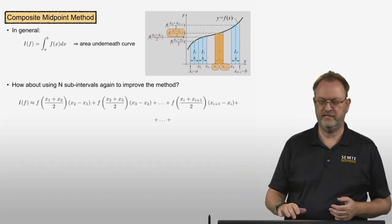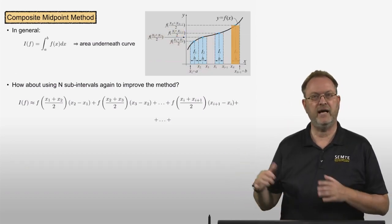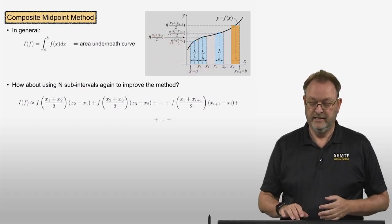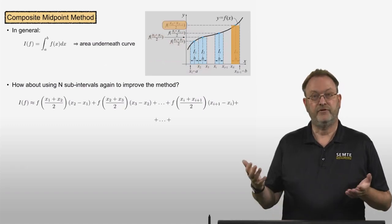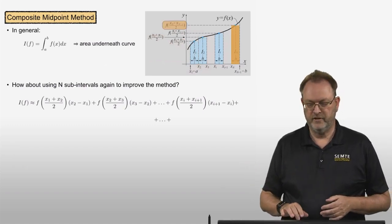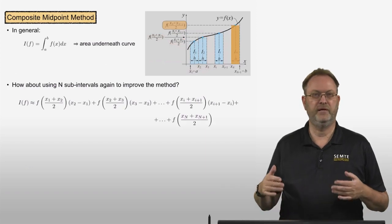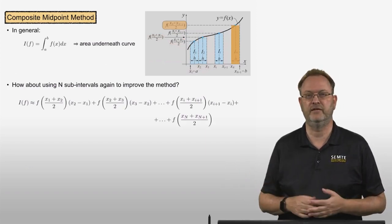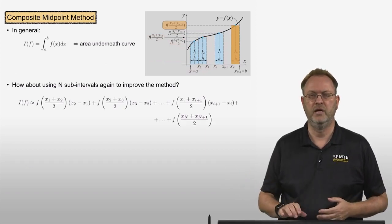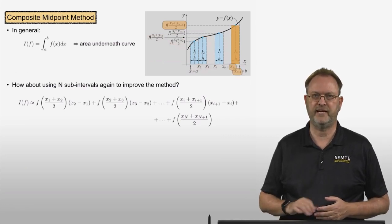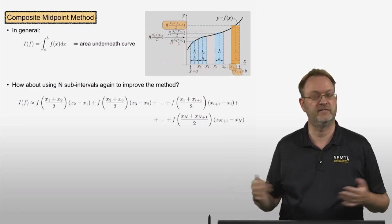We keep going until we hit the last, nth subinterval. The height of the rectangle is f evaluated at the midpoint (x_n + x_{n+1})/2, and the width is x_{n+1} minus x_n.